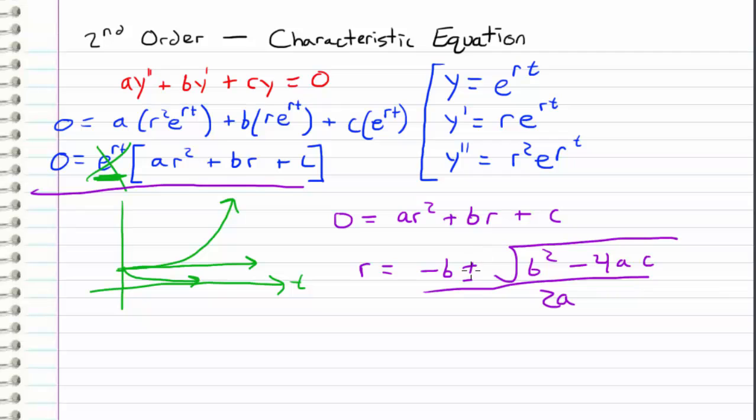The next thing that I want to point out is that we have this plus and minus. And that means that we actually have two roots. We have r is equal to negative b plus all this stuff and we have r is equal to negative b minus all that stuff.